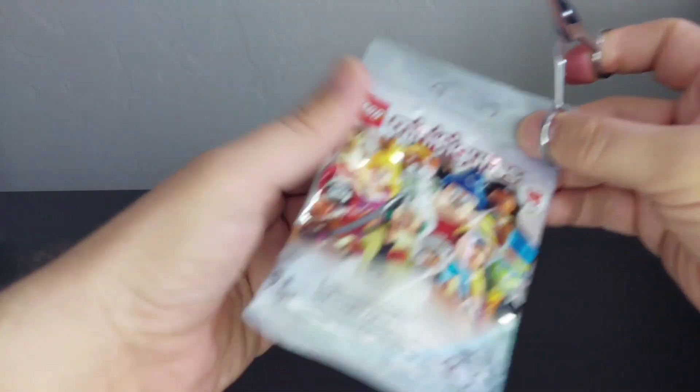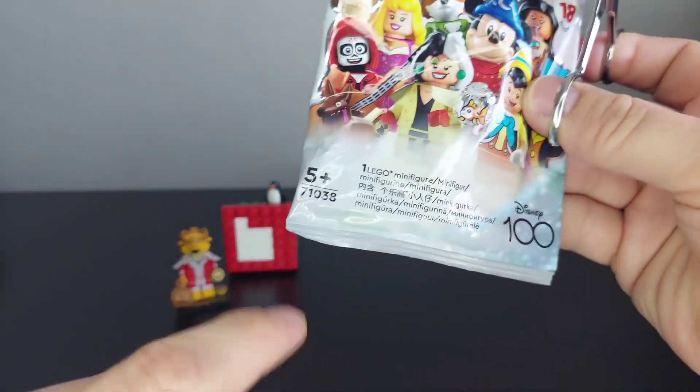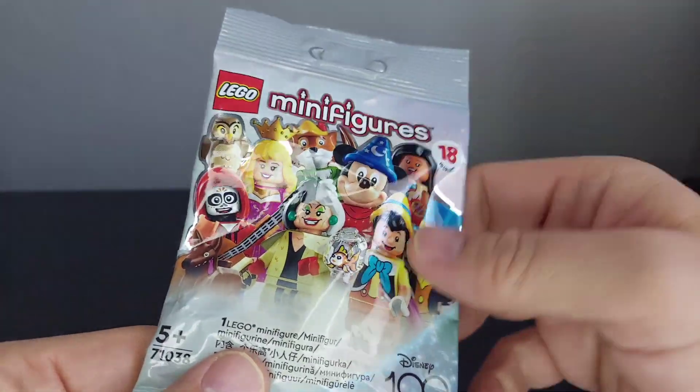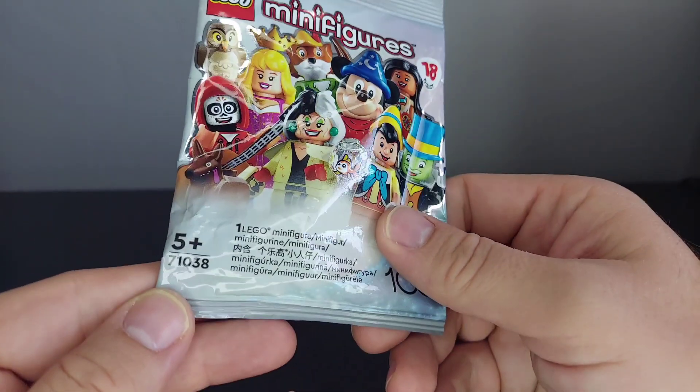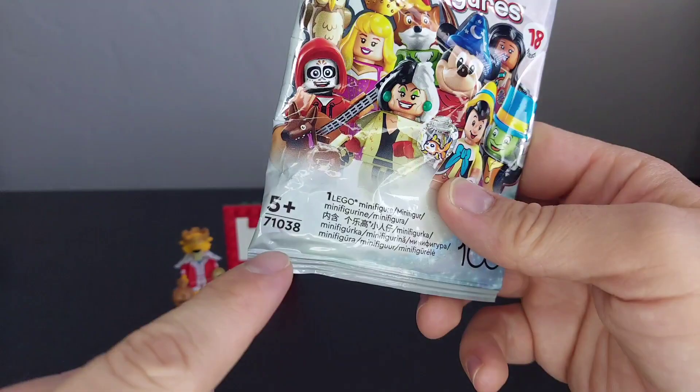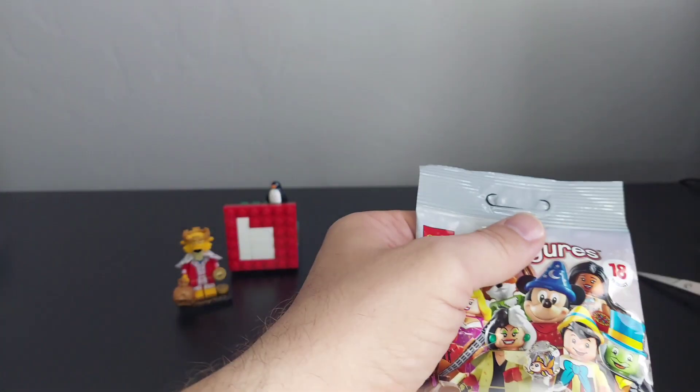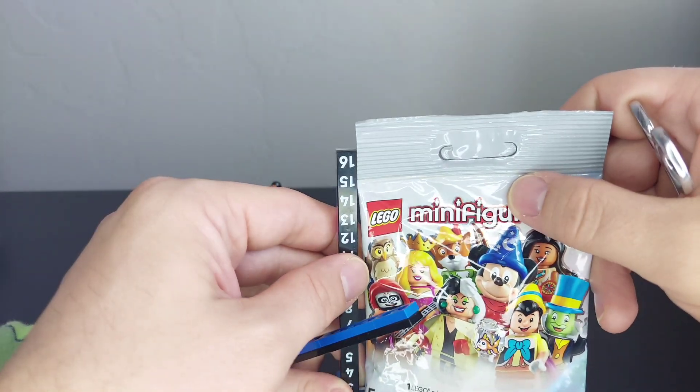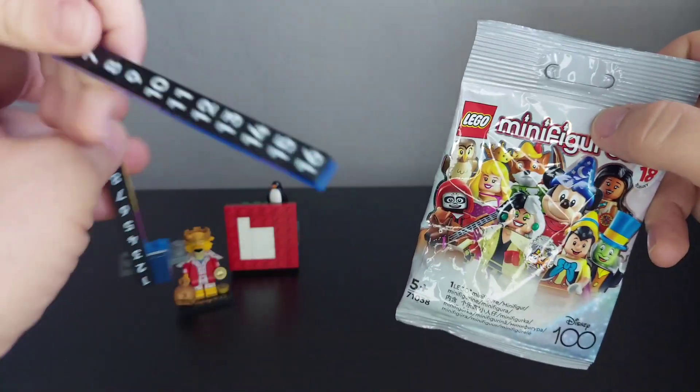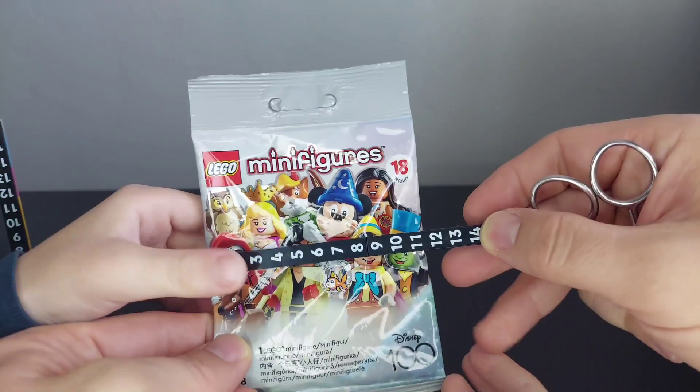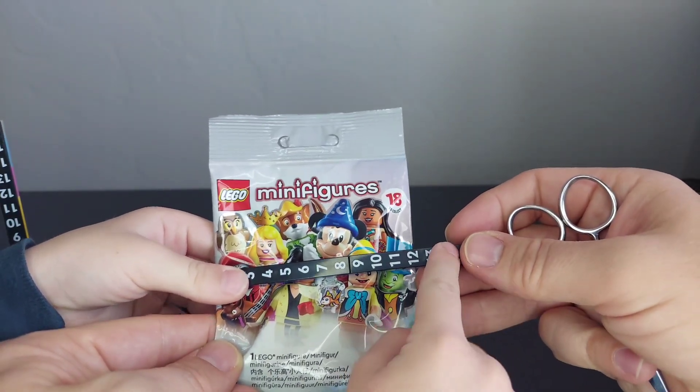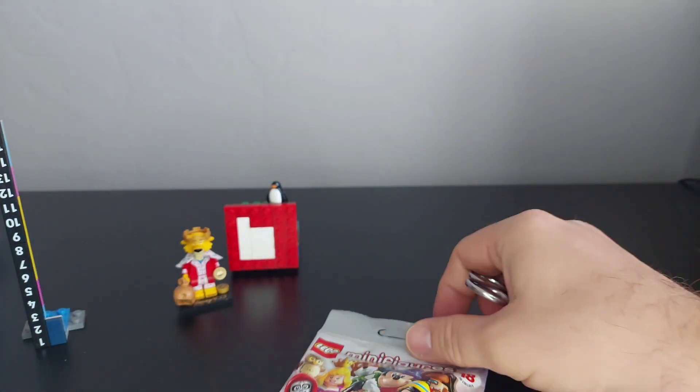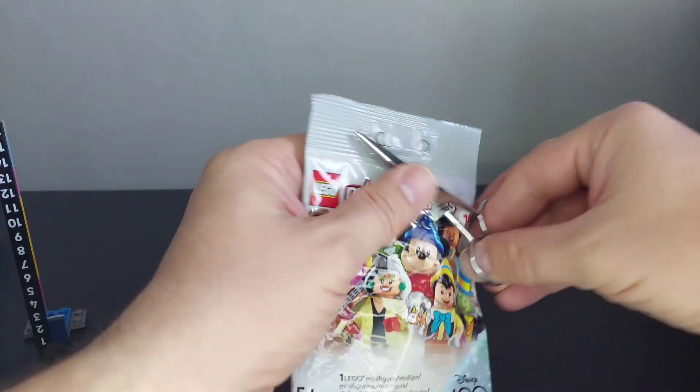This is Series 3, the Disney 100, which just came out beginning of May. The set number is 71038. Let's go ahead and open it up. The bag looks like 17 centimeters tall, 12 wide, and he's six pieces high.